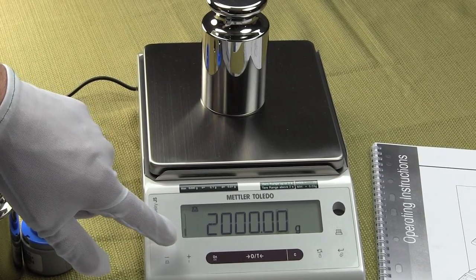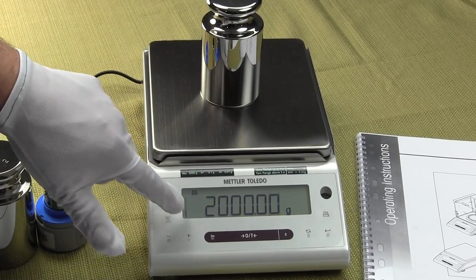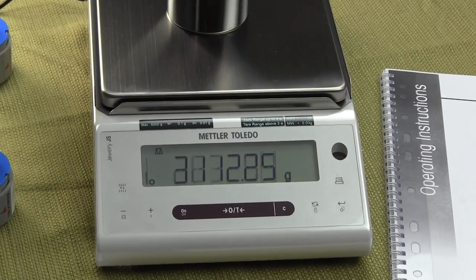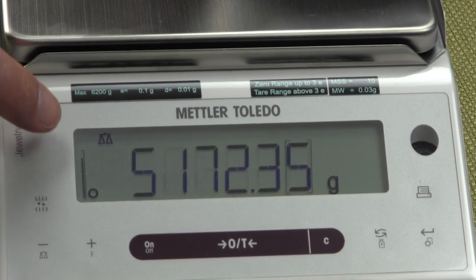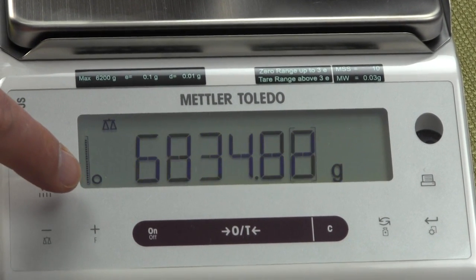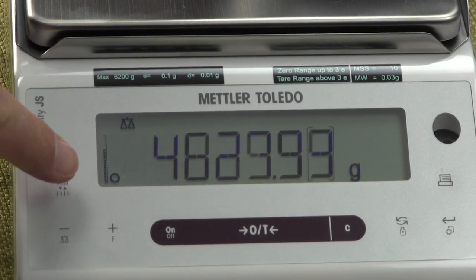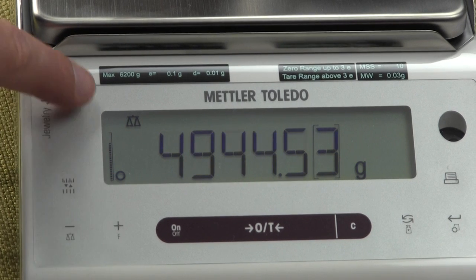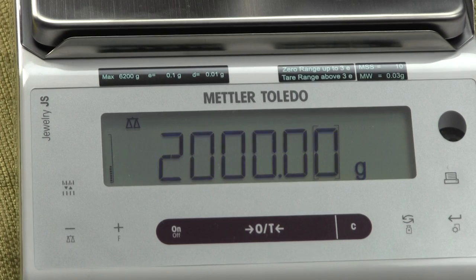You'll notice here on the left-hand column, this is basically a weigh guide giving you some idea of the capacity. So right now we're at 2000.00. And as I put more weight on the balance, you'll see the fill guide go up until when you go over. 6,200 grams is the maximum. It's about 13.4 pounds.